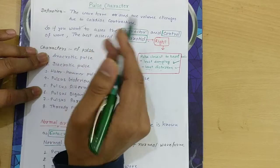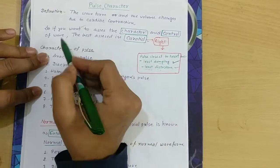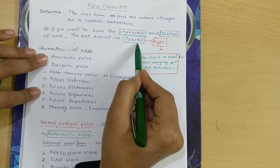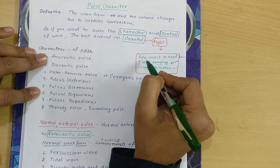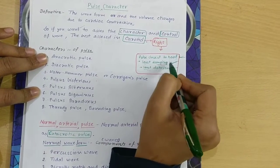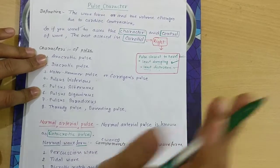If we want to assess the character and control of a wave, the best assessment is done in carotid, in right carotid, because the pulse is closest to the heart, least damping is seen and least distortion is seen.